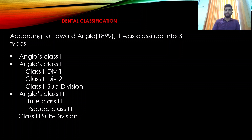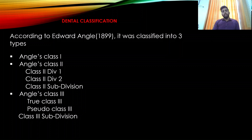In Class 1, the mesiobuccal cusp of the maxillary molar falls in the buccal groove of the mandibular molar. In Class 2, the distobuccal cusp of the maxillary molar falls in the buccal groove of the mandibular molar. Class 2 has two divisions and one subdivision.